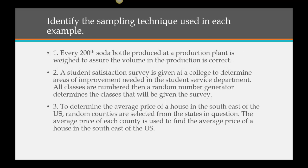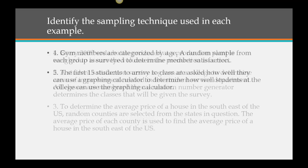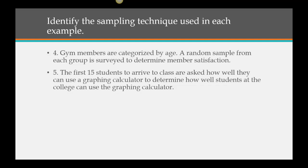Let's list some examples and identify the sampling technique. Example 1: Every 200th soda bottle produced at a plant is weighed to assure the volume is correct. Example 2: A student satisfaction survey is given at a college — all classes are numbered, then a random number generator determines which classes get the survey. Example 3: To determine the average house price in the southeast U.S., random counties are selected and their average prices are used. Example 4: Gym members are categorized by age, and a random sample from each group is surveyed. Example 5: The first 15 students to arrive to class are asked how well they can use a graphing calculator.